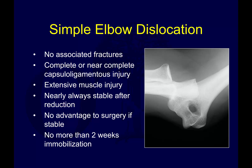We're going to go through both simple and complex elbow dislocations. A simple dislocation is essentially a dislocation without a fracture — just a ligamentous injury, no associated fracture, a complete or near-complete capsule-ligamentous injury, and likely varying degrees of muscle injury. These are typically stable after closed reduction, and it's uncommon that surgery is needed. Occasionally you can have an unstable case that might need surgical treatment. Typically, to prevent excessive stiffness, you have no more than two weeks of immobilization.